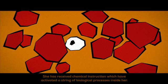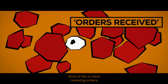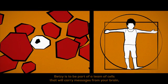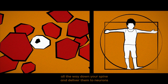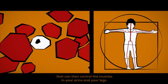She has received chemical instructions which have activated a string of biological processes inside her, kind of like a robot receiving orders. Betsy is to be part of a team of cells that will carry messages from your brain all the way down your spine and deliver them to neurons that can then control the muscles in your arms and your legs.